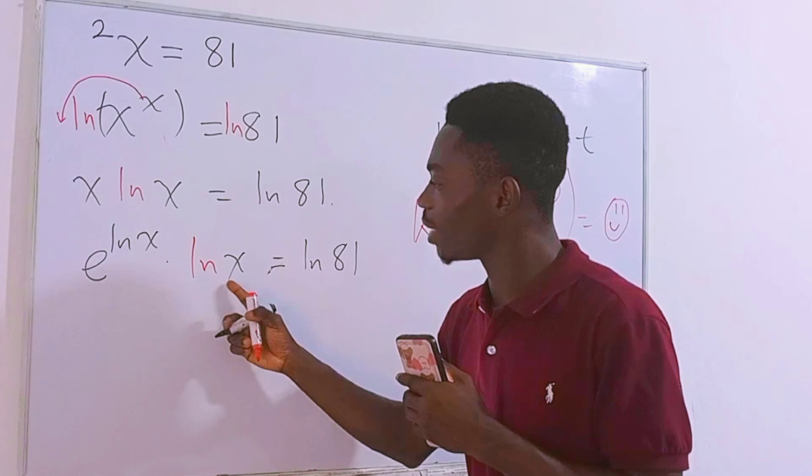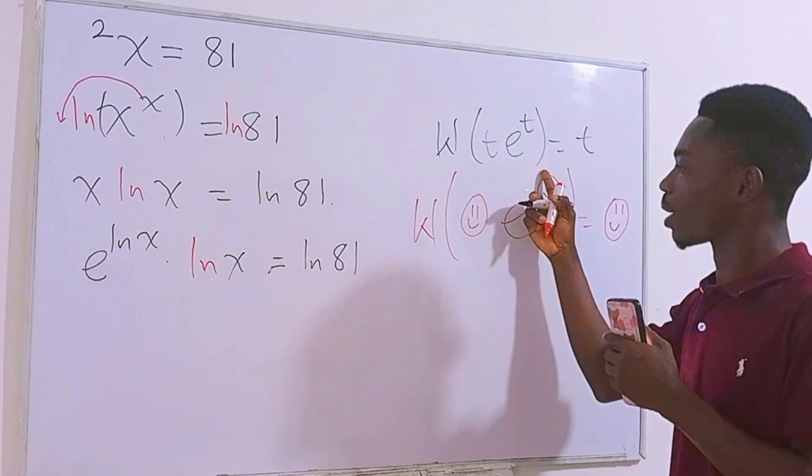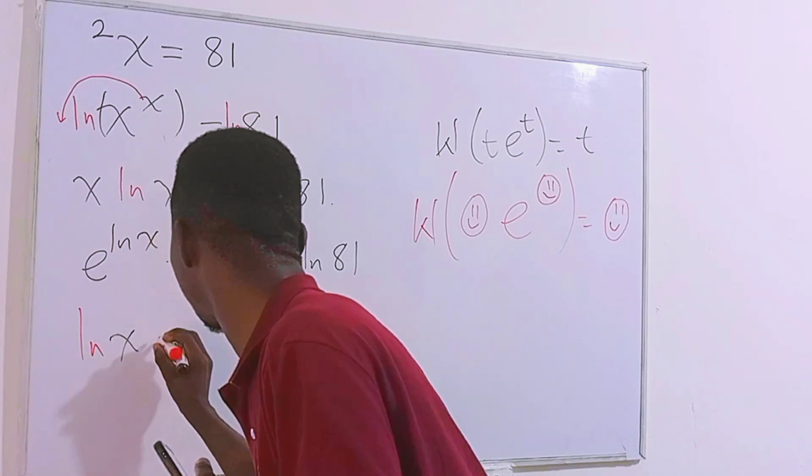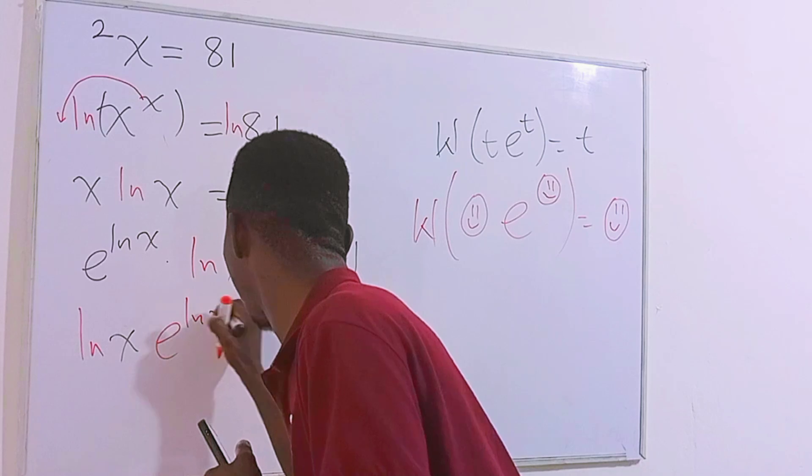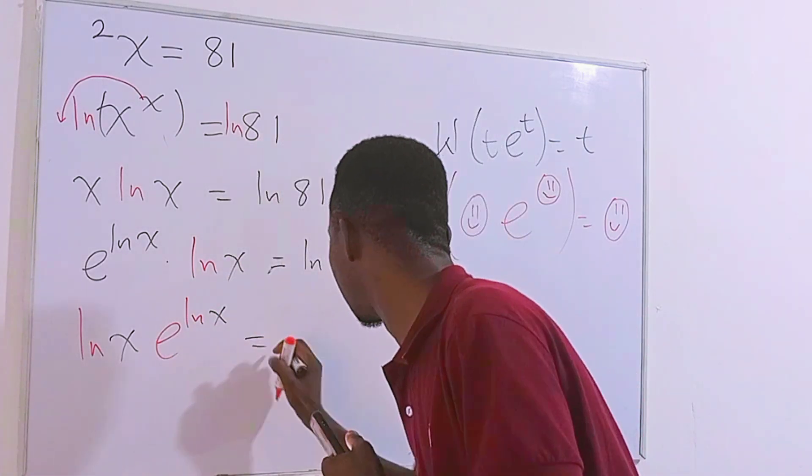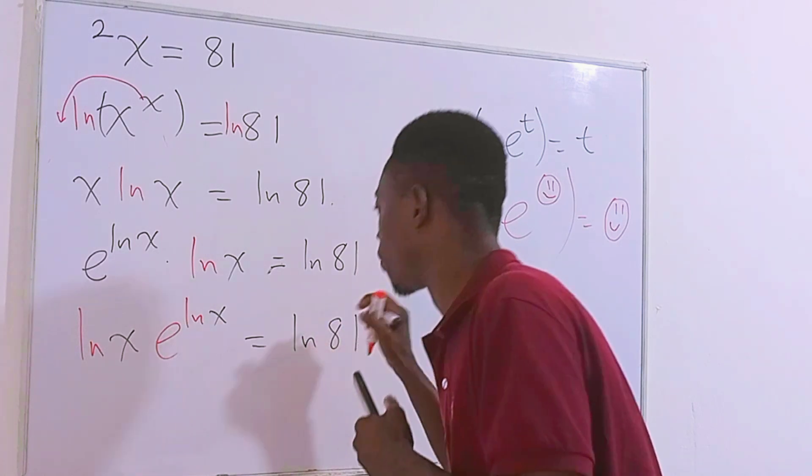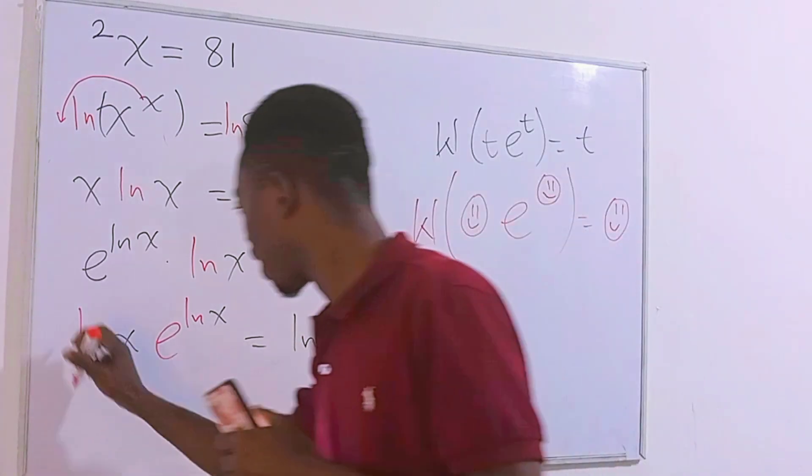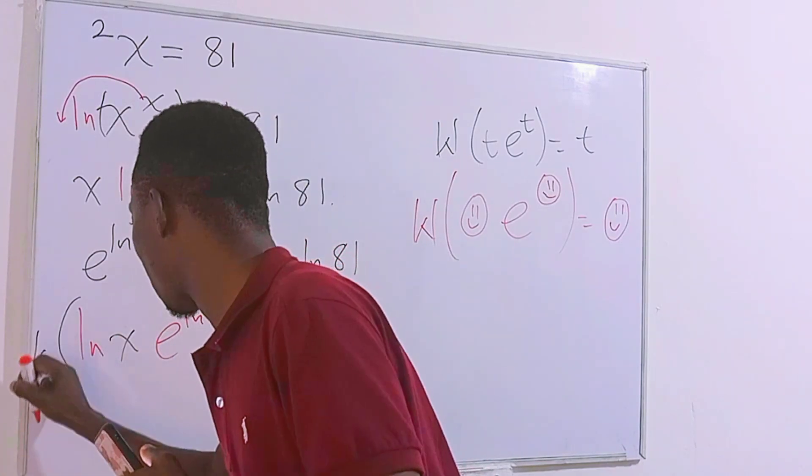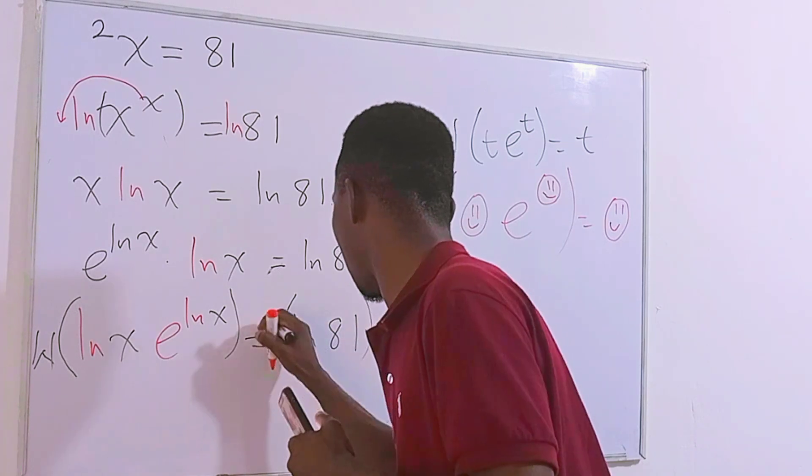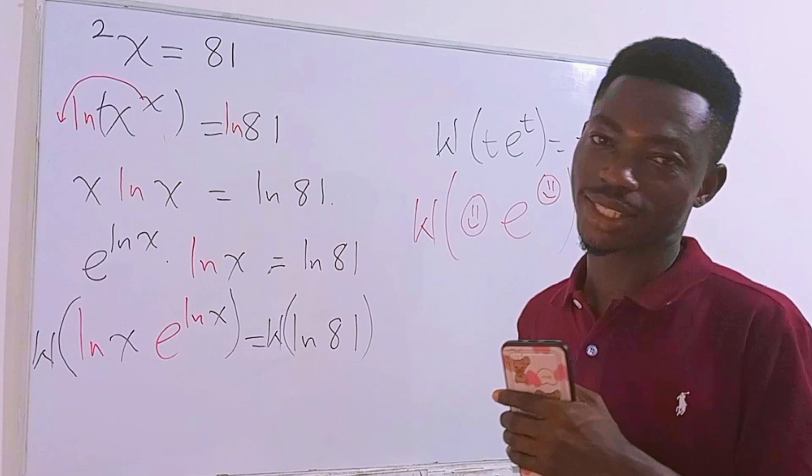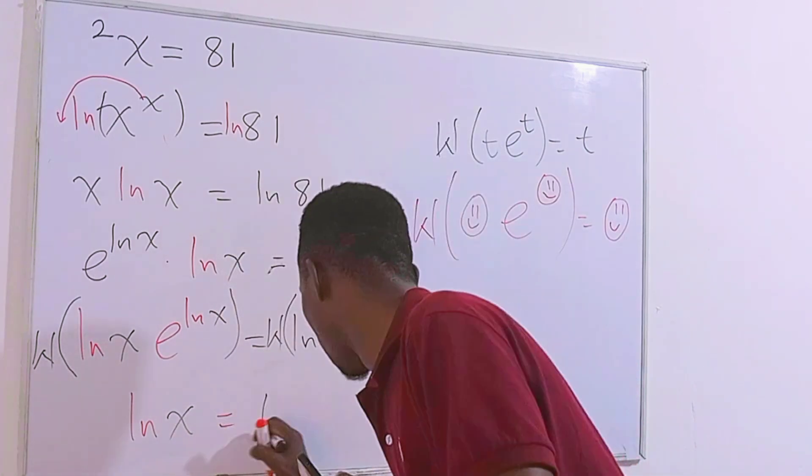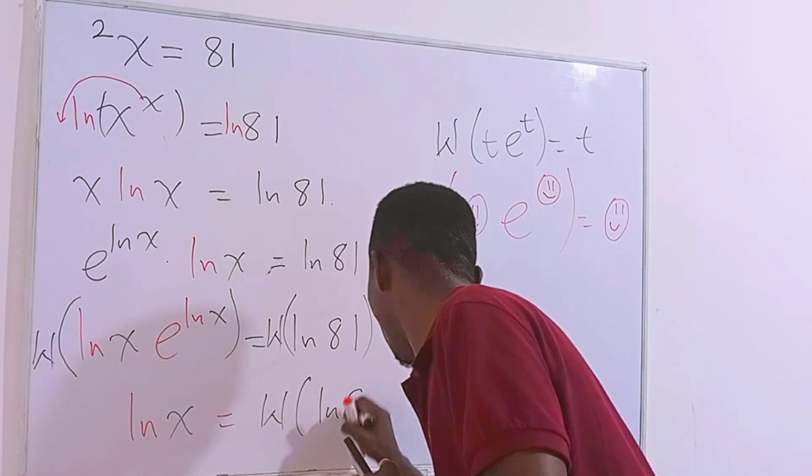Now permit me to bring this ln to the front right here so that it will look just like this one. T e to the power t. So let me do that really quick. We have ln of x e to the power ln of x. This time they are the same. And this is equal to ln of 81. And now that this is of this form we can easily take Lambert W function on each side of the equation just like this.